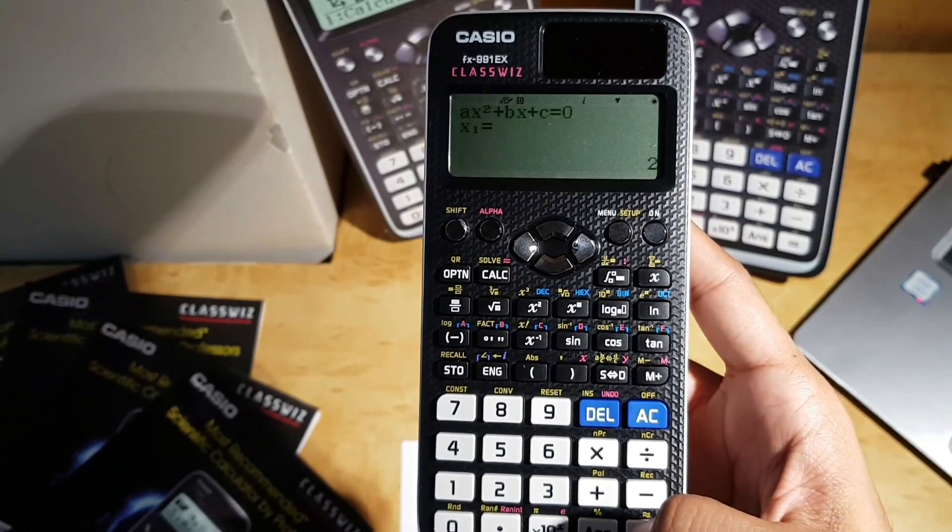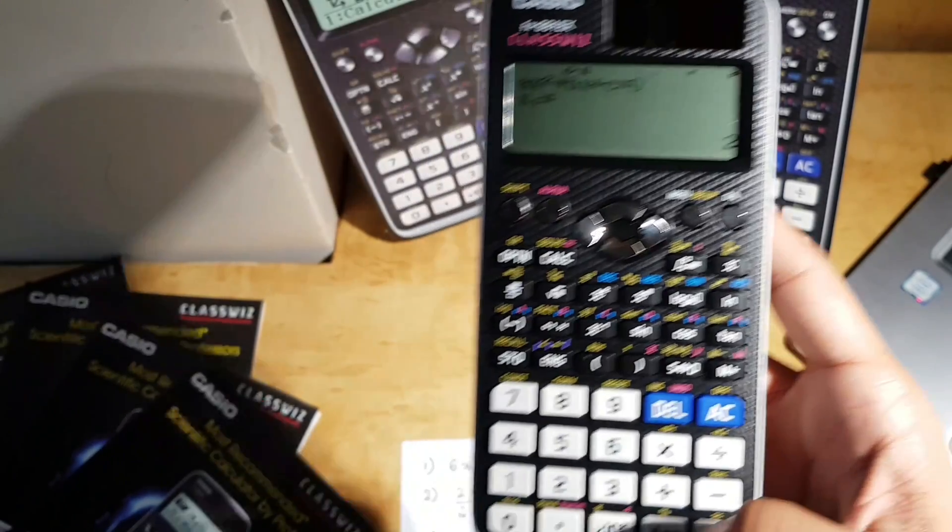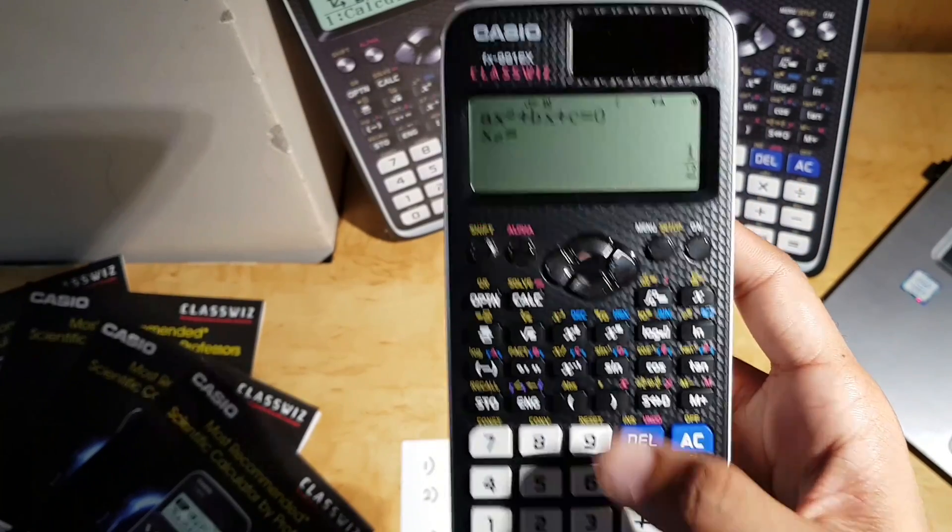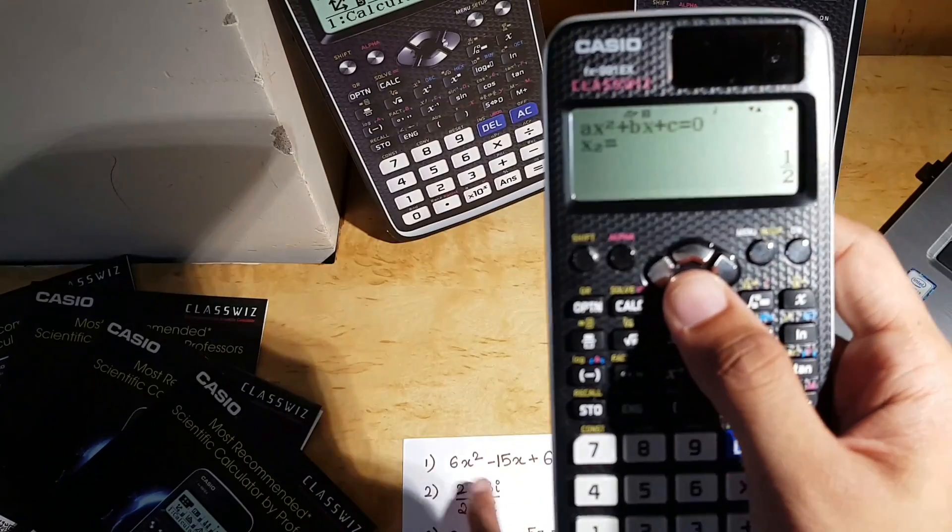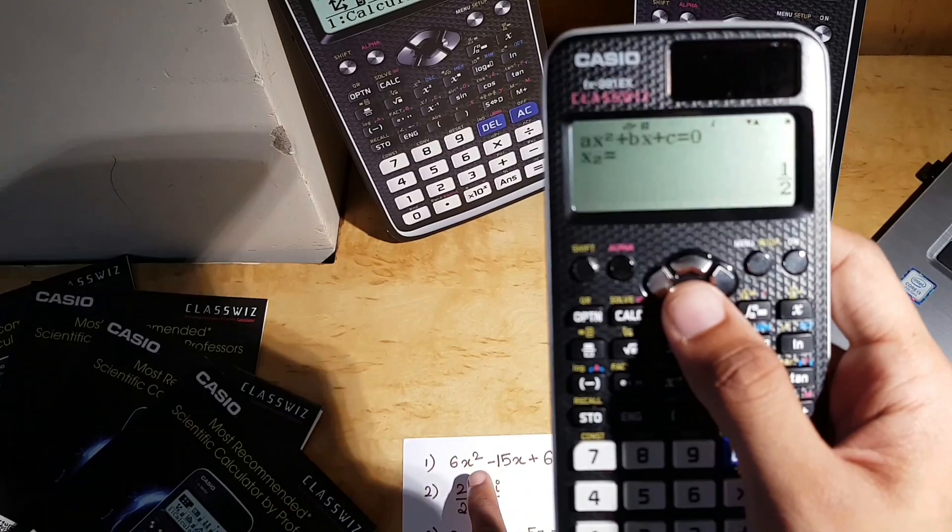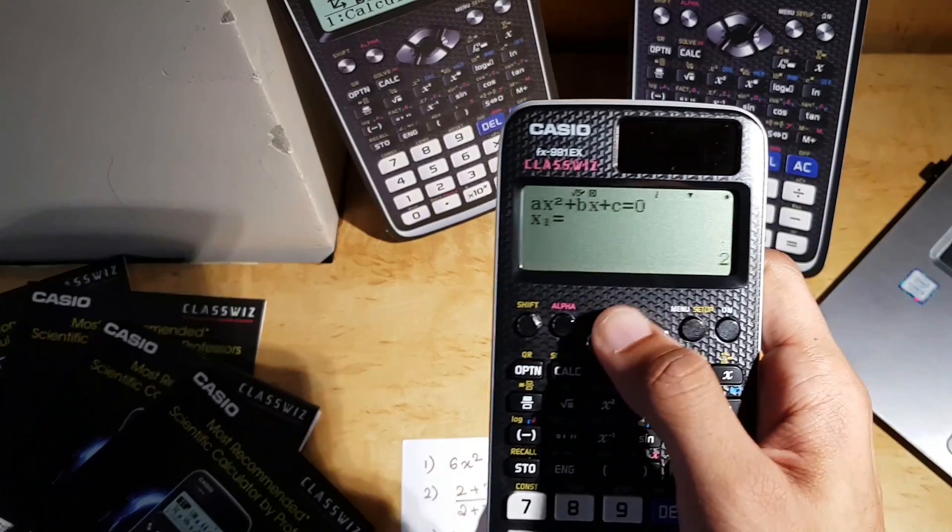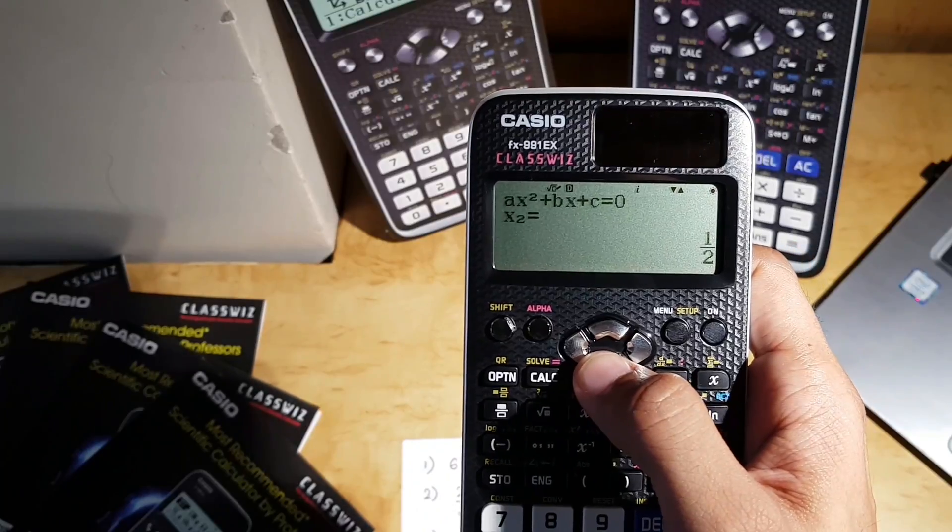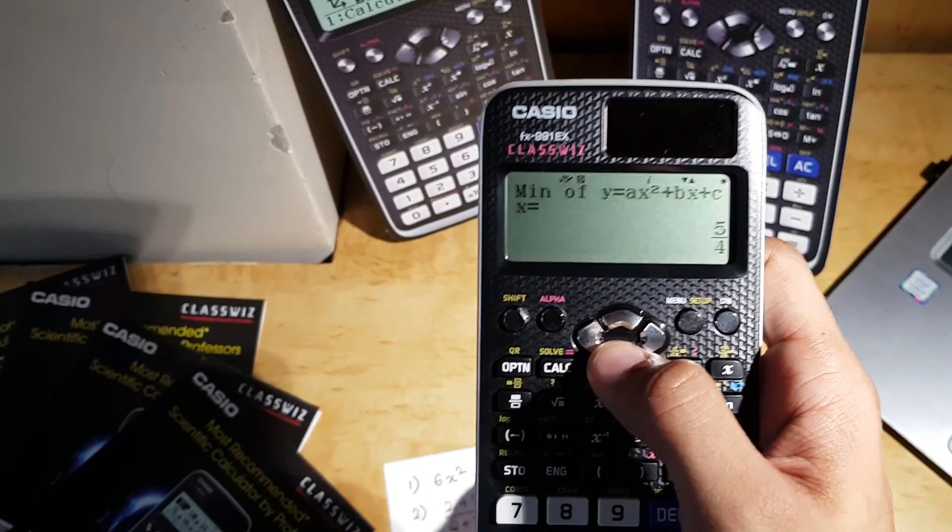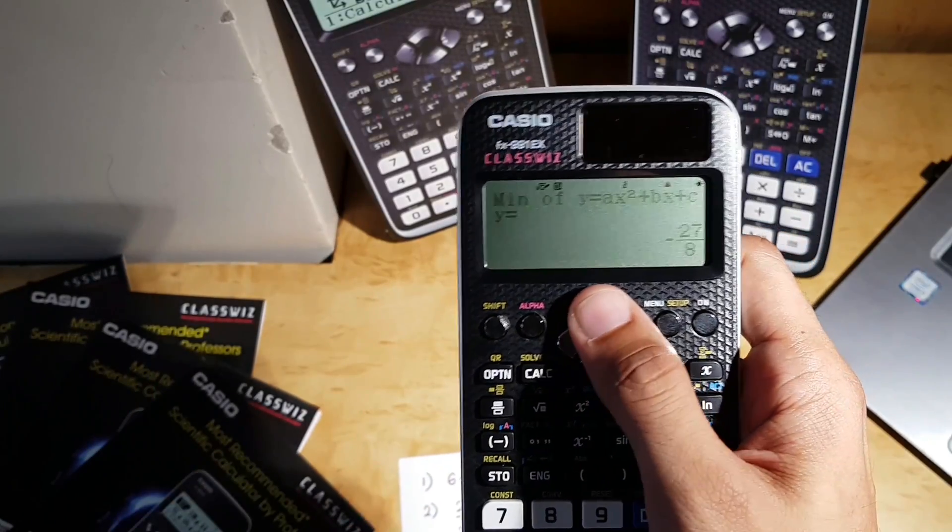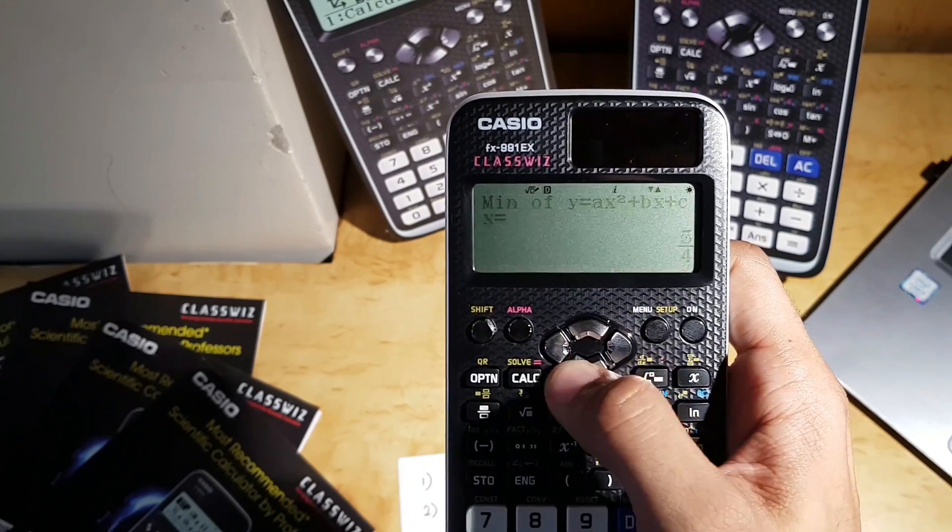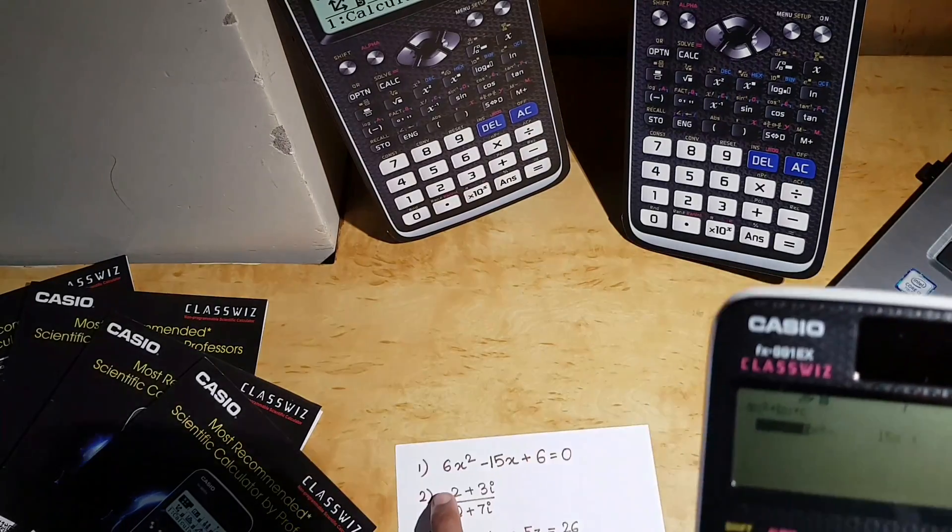When I put enter again, it will give me the solution. The answer is 2 and the second answer is half. Since it's a second degree polynomial equation, we get two roots of this equation. The first one is 2, which is x1. The second one is half, and then the maxima and minima of this is also visible. Moving on to the next feature.